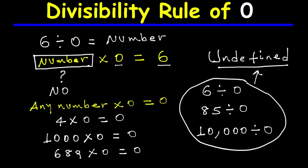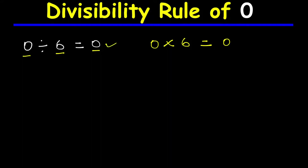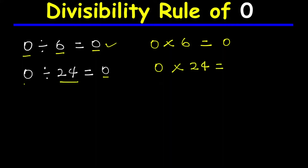Now let's divide zero by a non-zero number. Zero divided by six is equal to zero. To check our division is correct, we multiply the quotient zero by the divisor six, which equals the dividend zero — so our division is correct. Another example: zero divided by one thousand is equal to zero. We multiply the quotient zero by the divisor one thousand, which equals the dividend zero — so our division is correct.